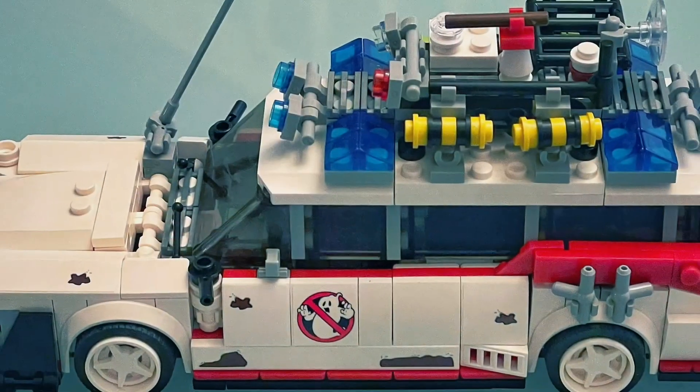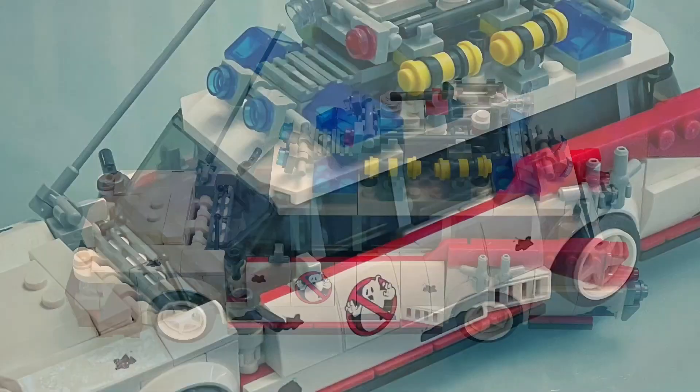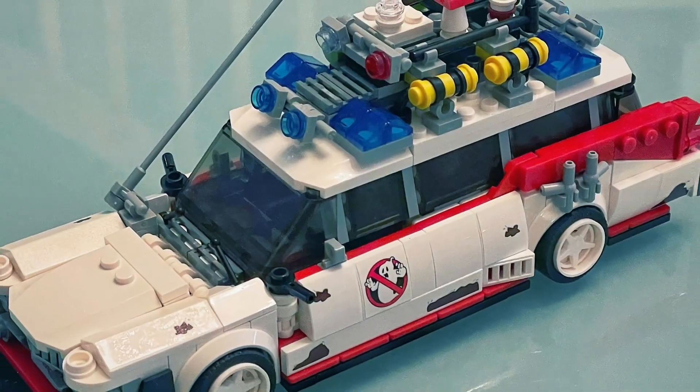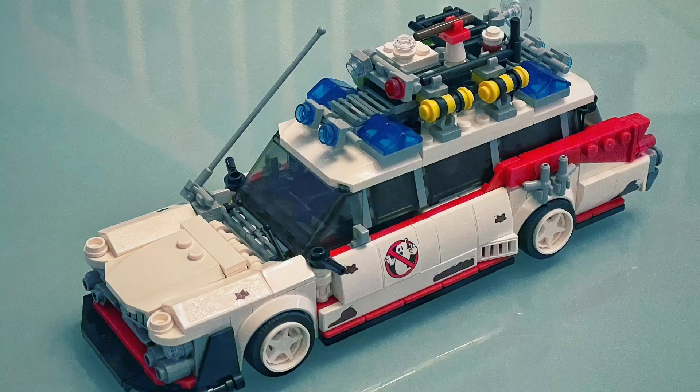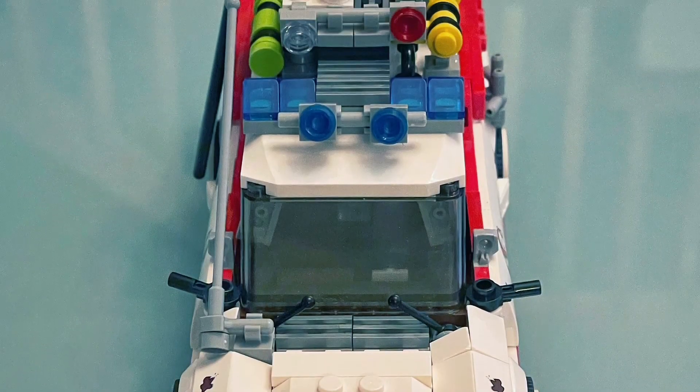The Lego is more accurate to the movie, but for some reason we like this one better. It's kind of a pimp version of the Ecto-1. This one has a sportier look, with the white mags, wheel arch, and side skirt.